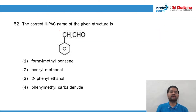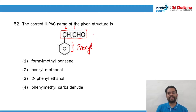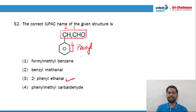The second question: the correct IUPAC name of the given structure. If I want to select the longest chain — this is the longest chain. Numbering: 1, 2, and this is phenyl. So the entire IUPAC name will be 2-phenyl-ethanol, and 2-phenyl-ethanol is option number 3.